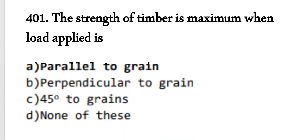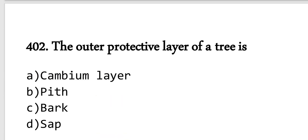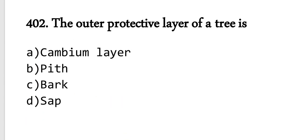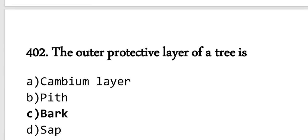Question number 402: The outer protective layer of a tree. This is a very common question. In my last class, we discussed the various parts of the tree: annular ring, cambium layer, pith, bark, and sapwood. The correct answer is bark. The outer protective layer of the tree is bark. Option C is the correct answer.